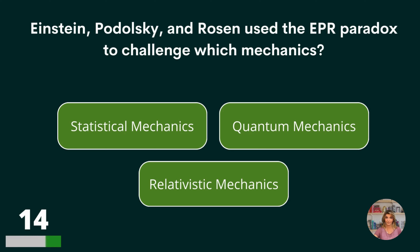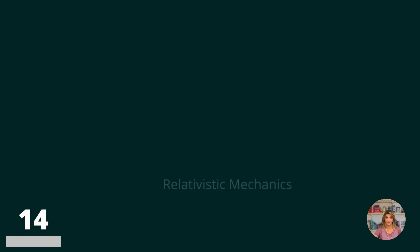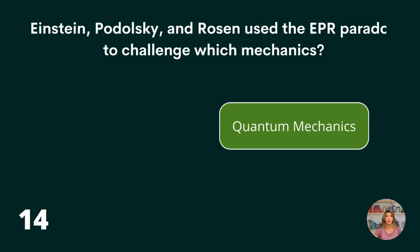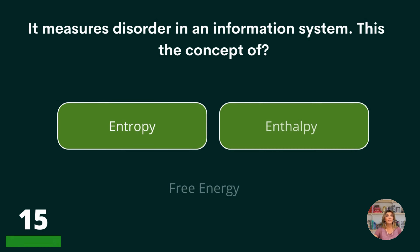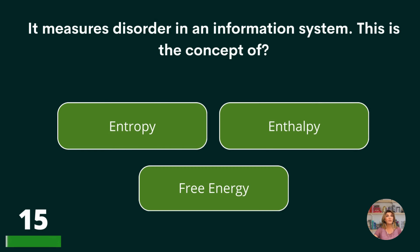Einstein, Podolsky, and Rosen used the EPR paradox to challenge which mechanics? Statistical, quantum, or relativistic? Quantum.